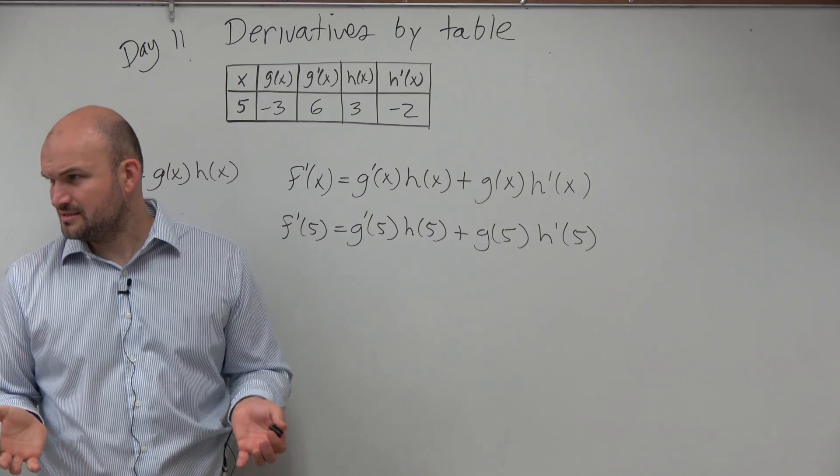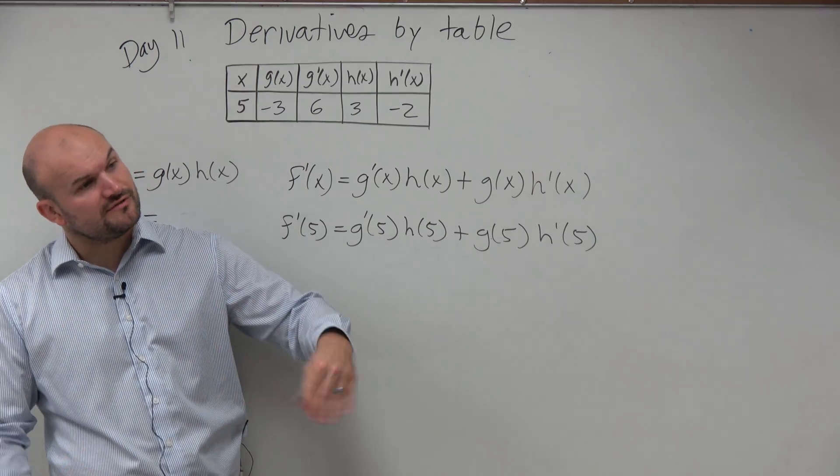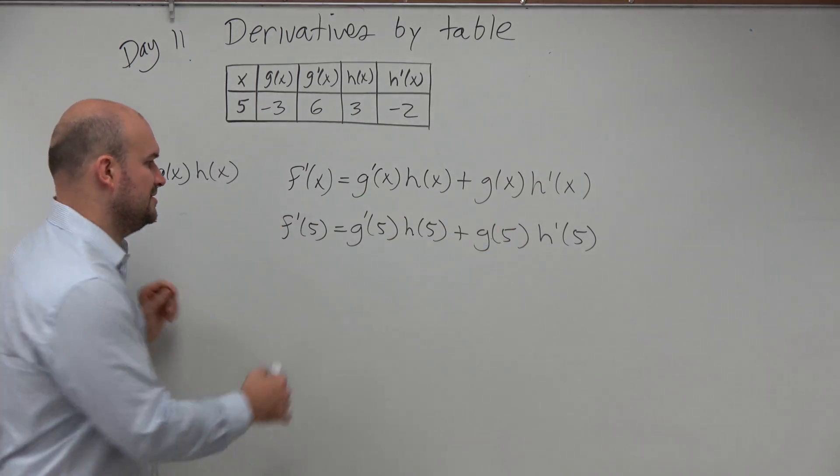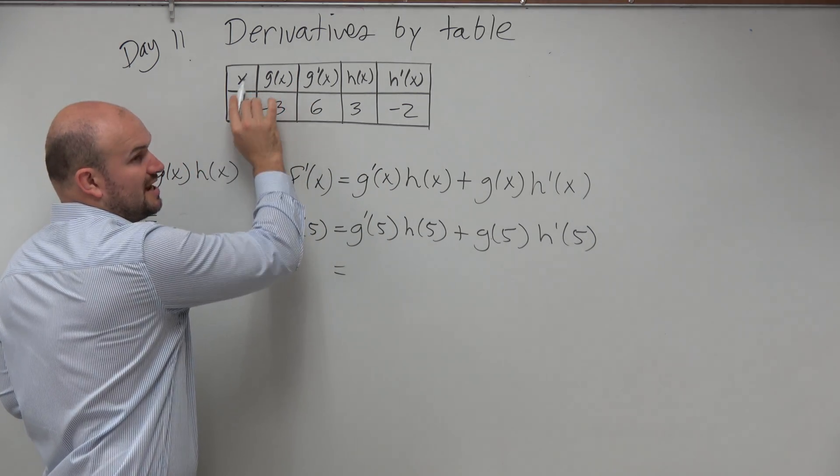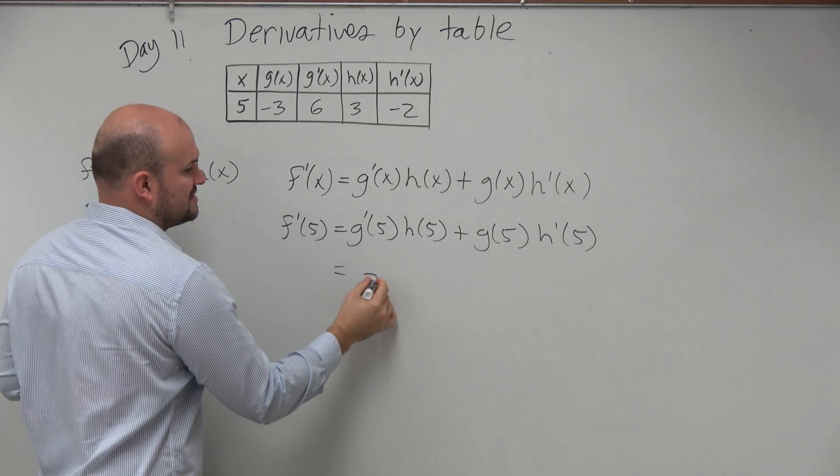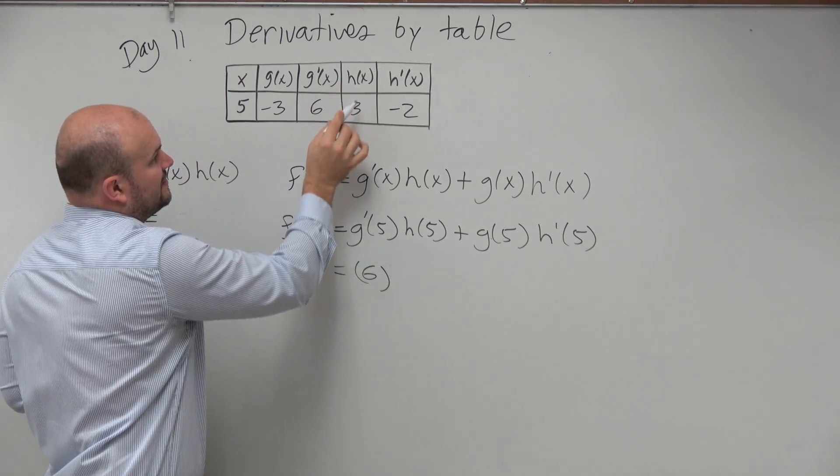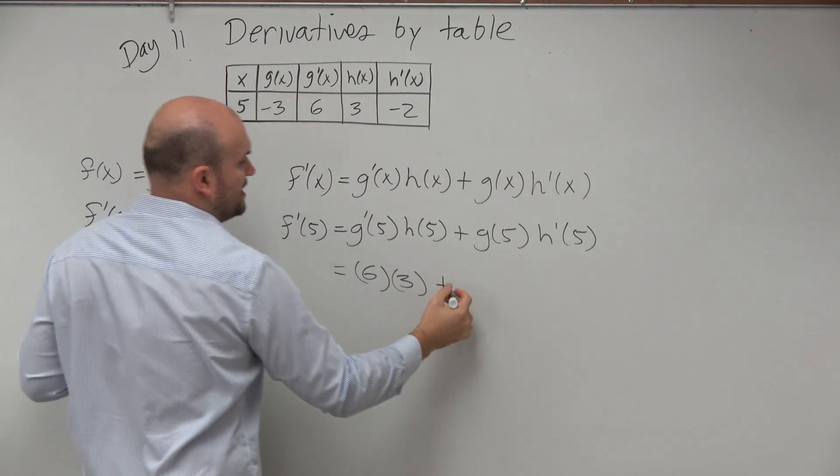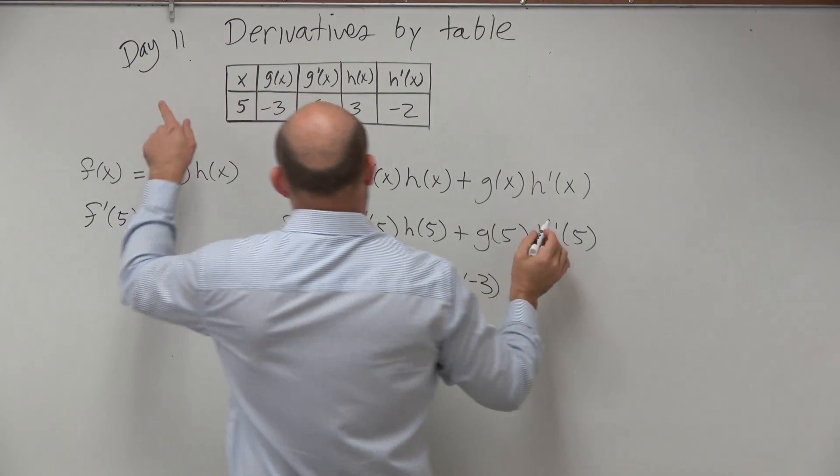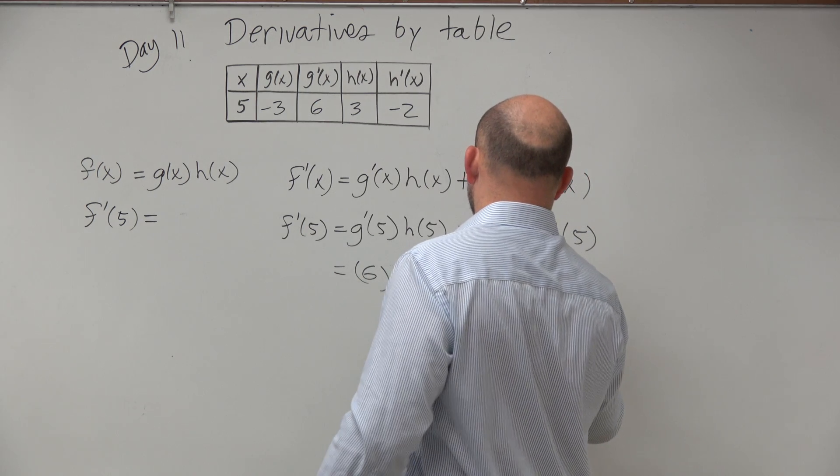Does that kind of make sense? So you got to do the derivative with your functions first and then we can basically use our table to evaluate. So g prime of 5, I just kind of go up. So again, this is when x equals 5, g prime of 5 is 6. h of 5 is going to be 3 plus g of 5 which is negative 3 and h prime of 5 which is negative 2.